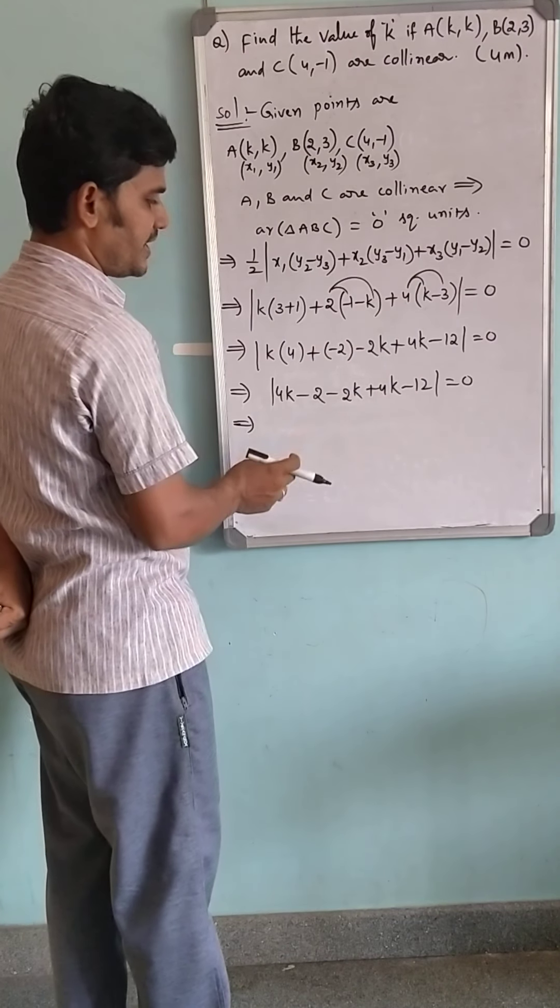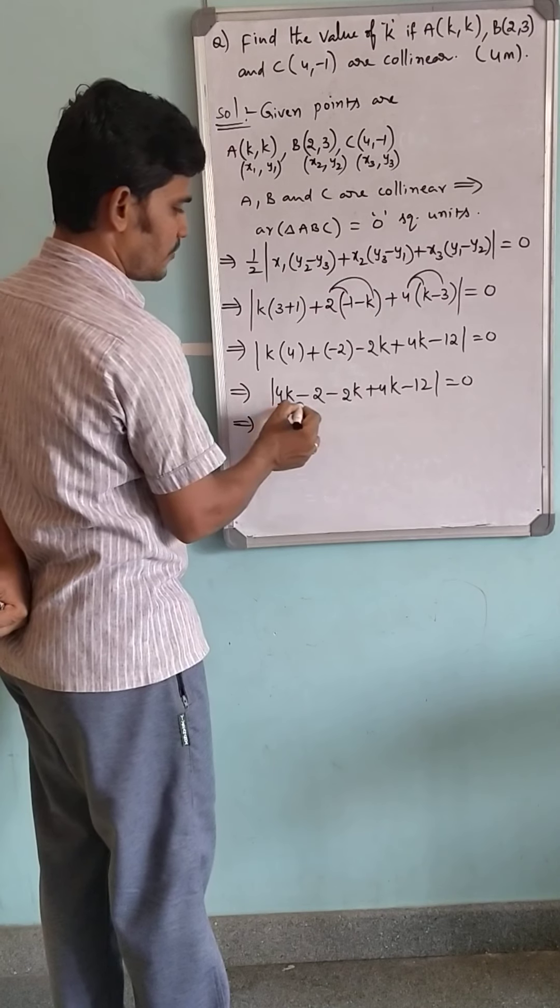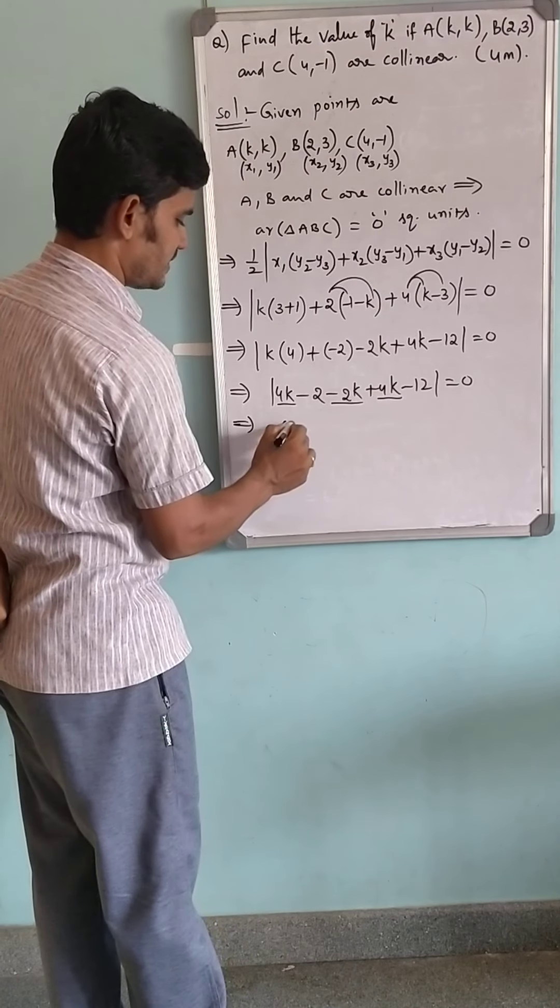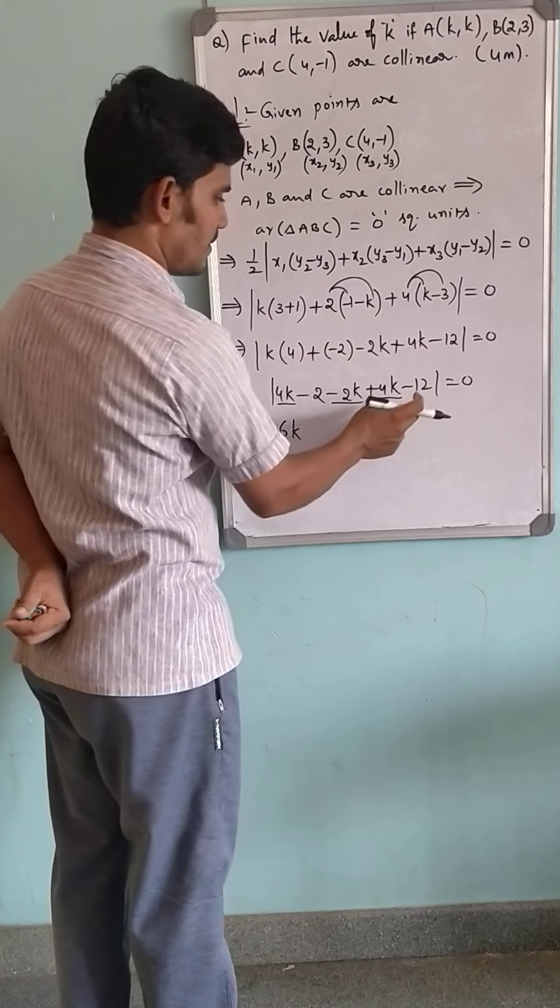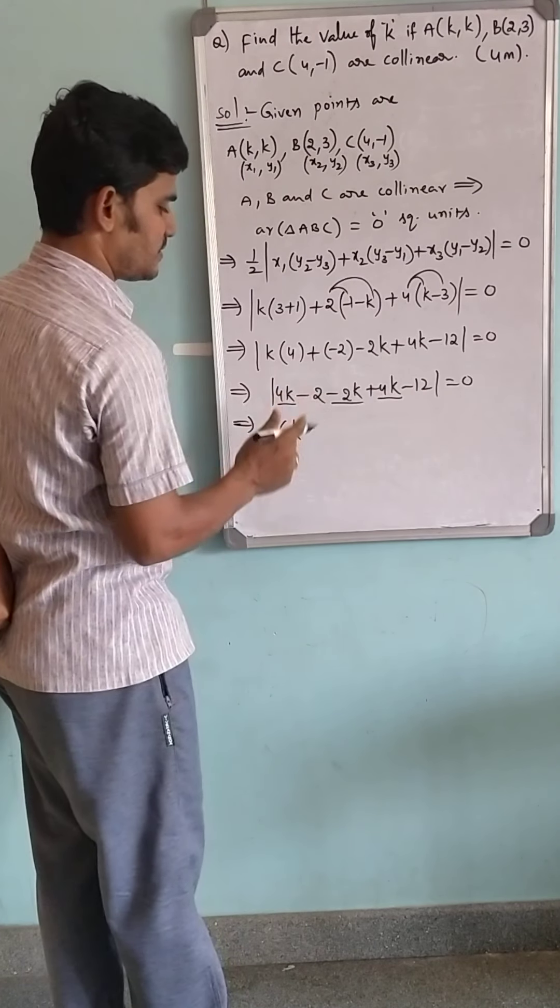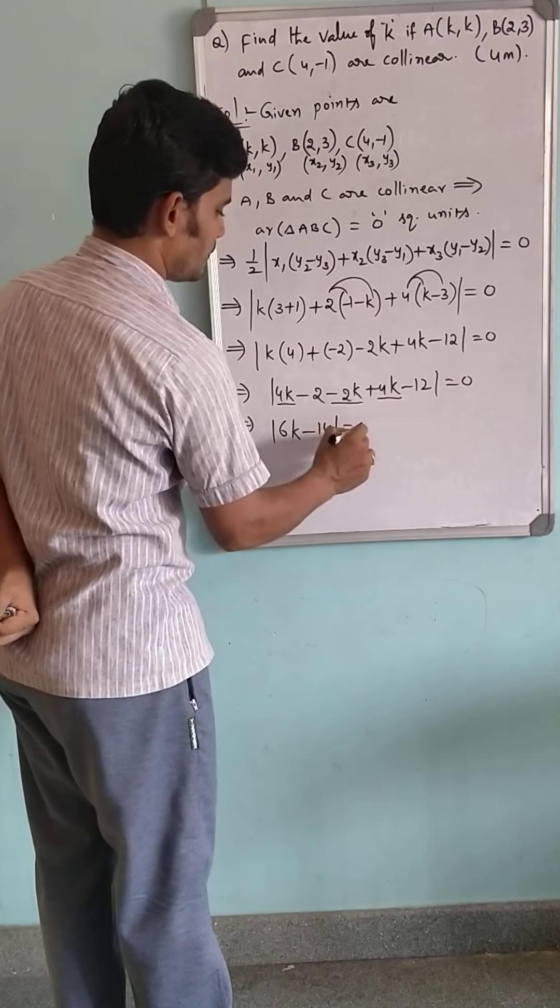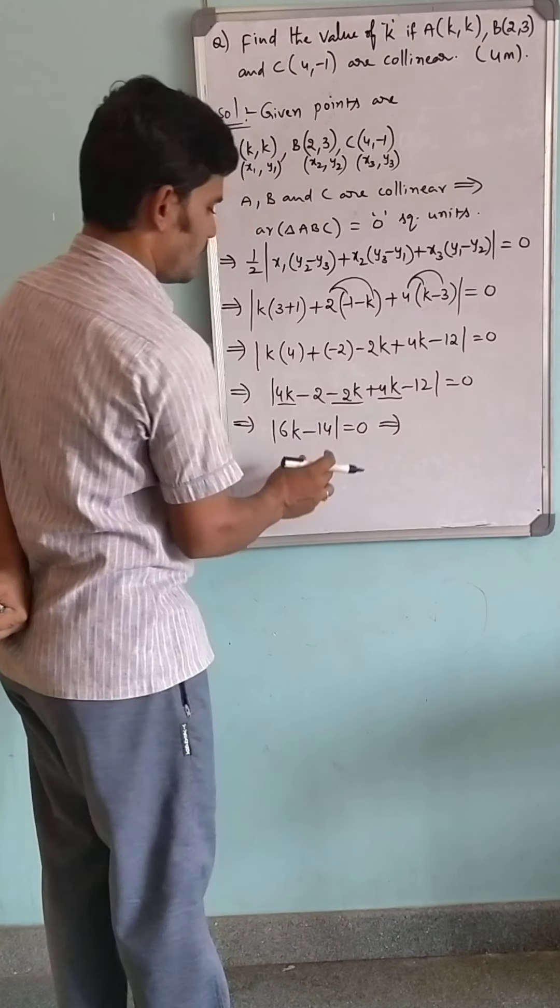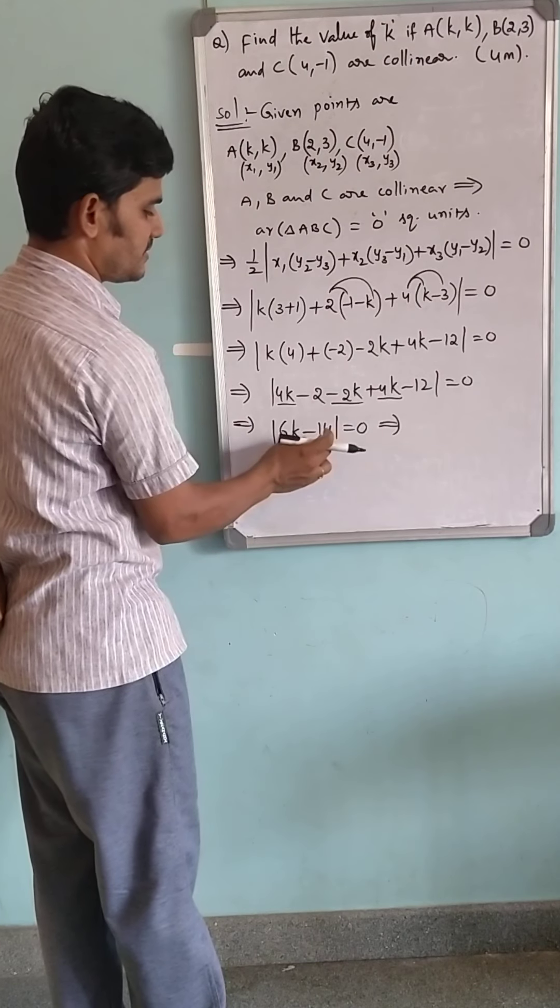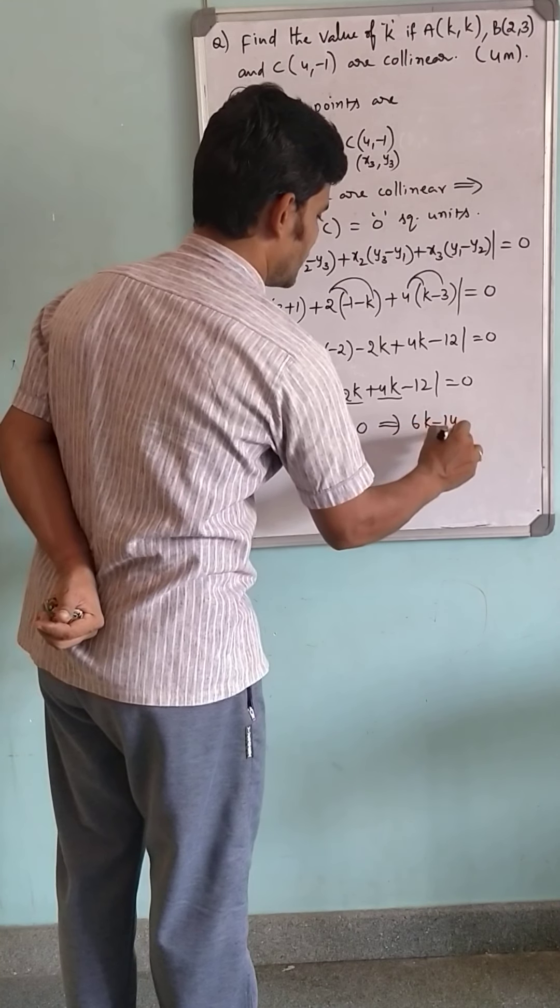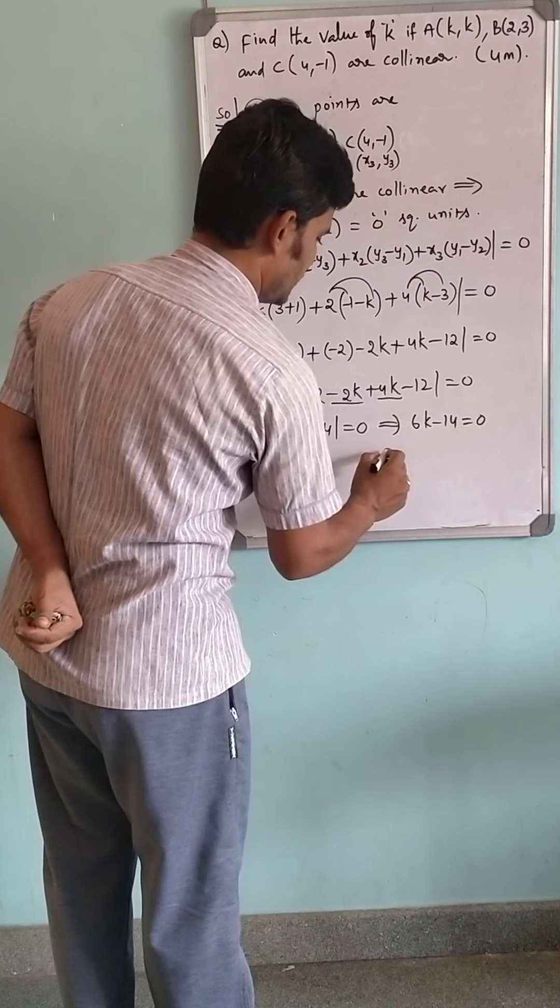What are the varying terms? 4K plus 4K minus 2K equals 6K. And constants: minus 2 minus 12 equals minus 14. So 6K minus 14 is equal to 0.